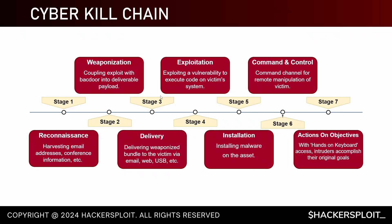The Cyber Kill Chain breaks a red team operation down into phases. Stage one is Reconnaissance — harvesting email addresses, conference information, etc. Stage two is Weaponization — coupling exploits with backdoors into a deliverable payload, such as developing malicious Word documents for initial access or any code used during post-exploitation. Stage three is Delivery — delivering the weaponized payload to the victim via email, web, or USB.